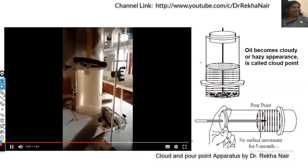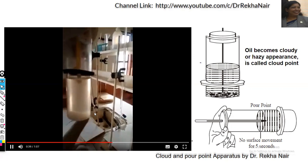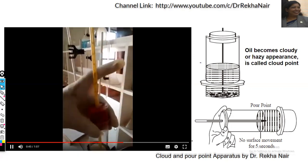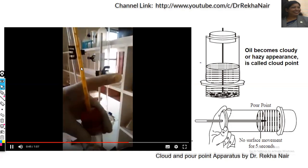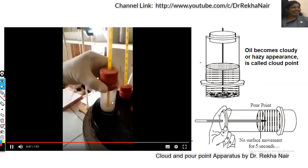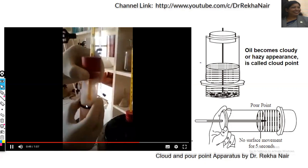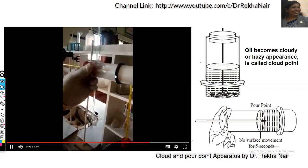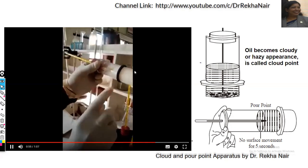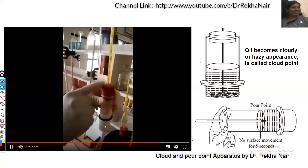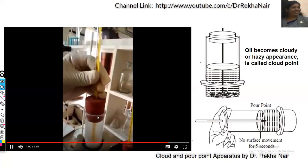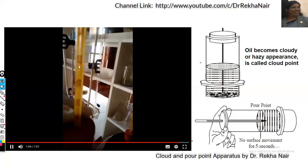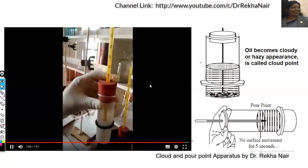At a particular temperature, the oil shows a hazy appearance — we call it the cloud point. The temperature is noted through the thermometer. Cooling is continued and at a particular temperature the oil stops flowing, or ceases to flow even if kept horizontally. The temperature at which it ceases to flow is called the pour point. The temperature can again be noted with the help of the thermometer.